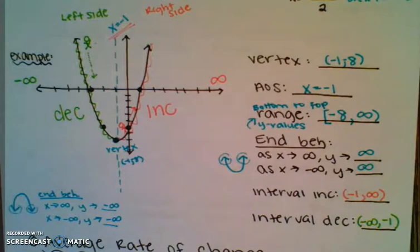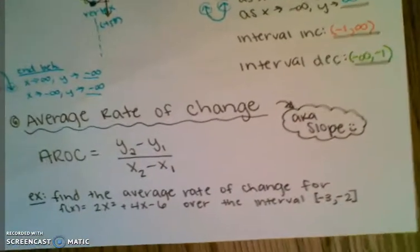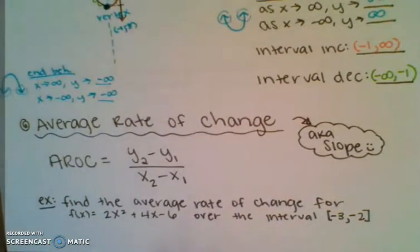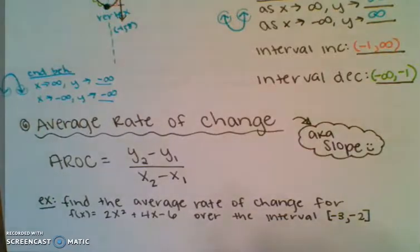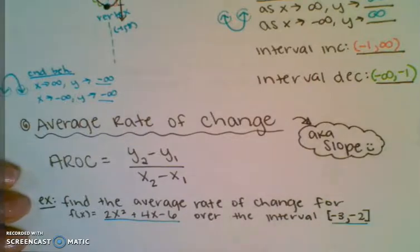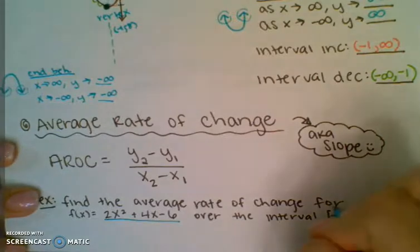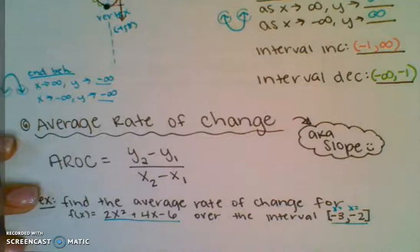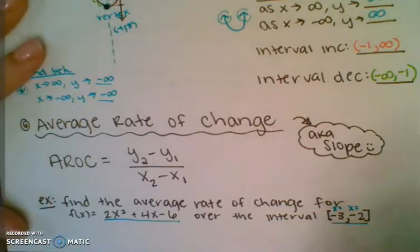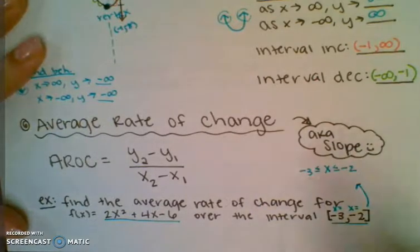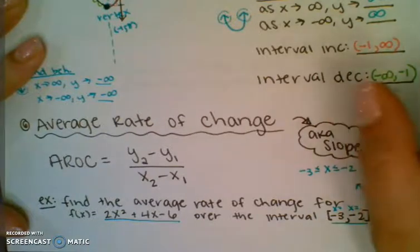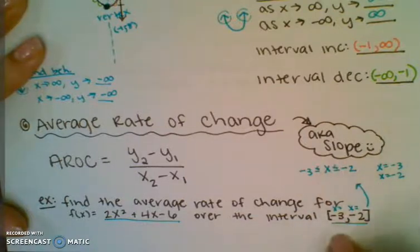The next thing is average rate of change — that's your slope. Here's the formula for average rate of change. For example: find the average rate of change for this function over the interval. This means I'm looking between x equals negative 3 and x equals negative 2. This could also be written as the interval in brackets, or as x equals negative 3 and x equals negative 2. You can see it any of these three ways and they all mean the same thing.